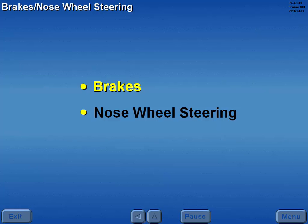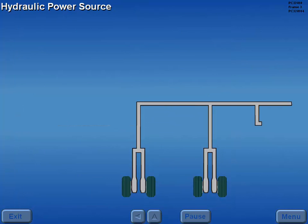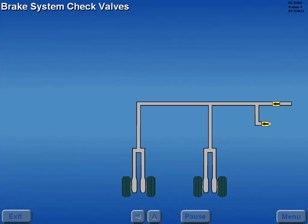Brakes. Aircraft braking is provided by multiple disc brakes installed on each main gear wheel assembly. Each assembly has a wear limit indicator. Main wheel brakes are normally powered by hydraulic system B. Normal system B hydraulic brake pressure is approximately 3,000 PSI. Check valves are located throughout the braking system to prevent reverse flow and loss of hydraulic fluid.